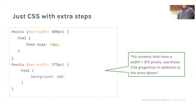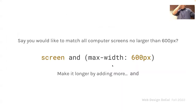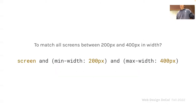You can also specify a range for your pixel values. To match all screens no larger than 600 pixels, this is what the syntax looks like — you don't need the 'and' if you don't want to, but 'and' helps when adding more conditions. For example, if you wanted a min-width and a max-width to bound a range — say a screen that looks good between 200 and 400 pixels — you can use this in your code and customize the properties there.